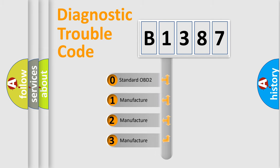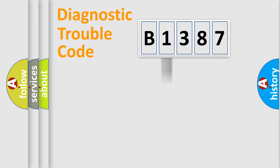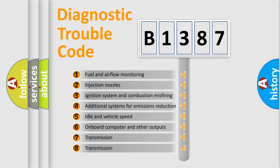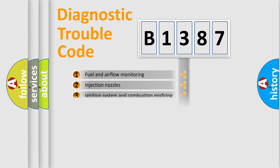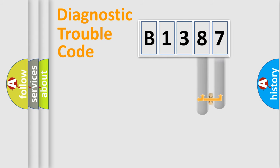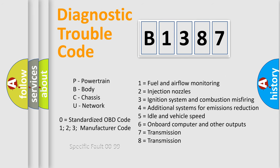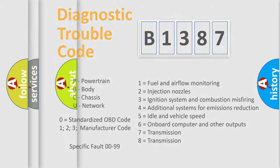If the second character is expressed as zero, it is a standardized error. In the case of numbers 1, 2, or 3, it is a more manufacturer-specific expression of the car error. The third character specifies a subset of errors. This distribution is valid only for the standardized DTC code. Only the last two characters define the specific fault of the group, and this division is valid only if the second character code is expressed by the number zero.